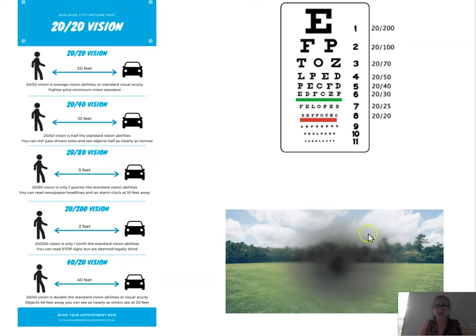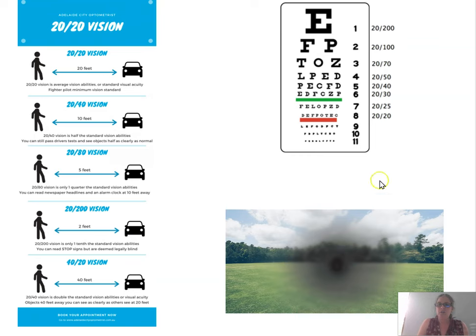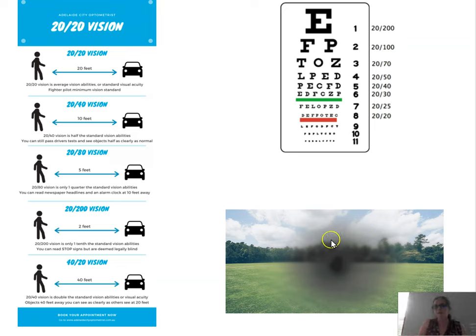Scotoma is an irregular blind spot — it should not look normal. It could be due to migraines, macular degeneration, glaucoma, or diabetes mellitus. What happens is there's an area in the retina that isn't functioning, and so you see this abnormal blind spot in your visual field.